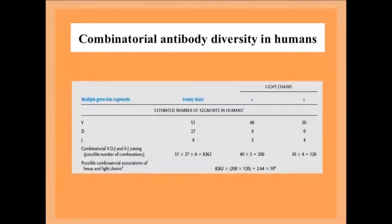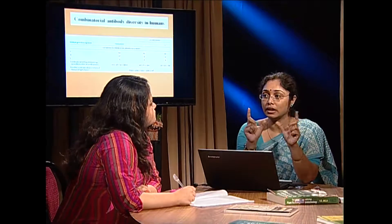There are many V gene segments, many D gene segments, and many J gene segments. Any one V segment can join with any one D segment and any one J segment. This combinatorial diversity means the number of different variable regions that can be generated is on the order of 10 to the power of 6, giving our immune system enormous variable region diversity.